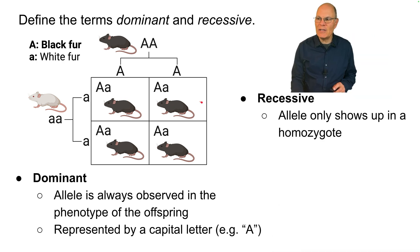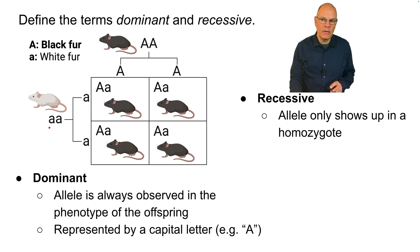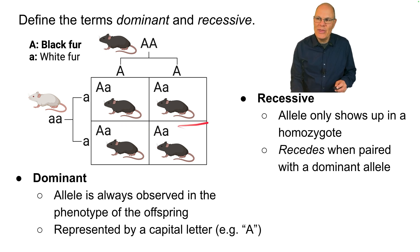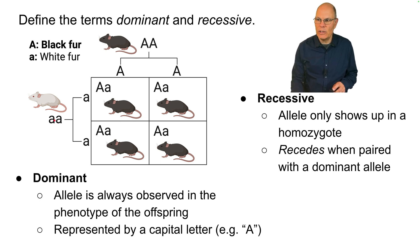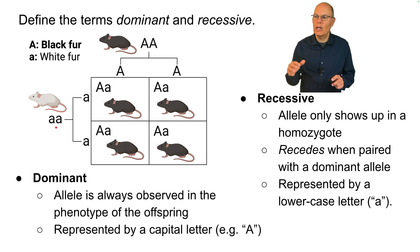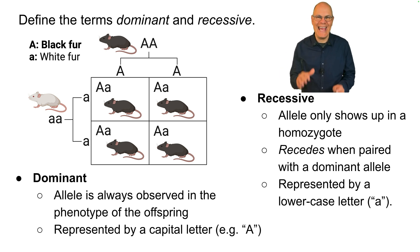A recessive allele only shows up in a homozygote. This mouse over here is homozygous recessive and therefore has the recessive appearance — that homozygous recessive allele recedes into the background when paired with a dominant allele. Recessive alleles are represented in the Mendelian system by a lowercase letter, in this case lowercase a.